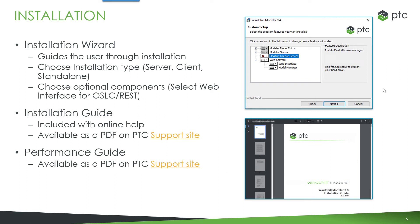When we perform the installation, we have different options to support those different types of deployments. This is shown through the installation wizard that guides the user through the install steps, and we can choose optional components such as the web interface. We provide installation guides — some are in the online help with the product, but also available as a PDF so you can read them before installing any software. We also have a performance guide and strongly recommend that you review its contents before starting your deployment.